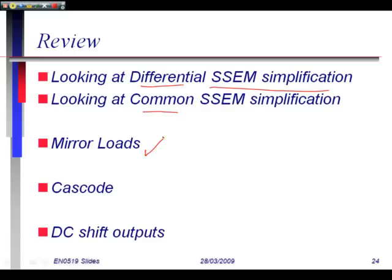As a review, we've got a small signal equivalent model, simplification that helps us design. That works for differential. We've got a different one that works for common mode signals. We've looked at very large gains using mirror loads. We've looked at cascode stage differential amplifiers where we've got common base following common emitter. And we've looked at both DC shifts in the output.